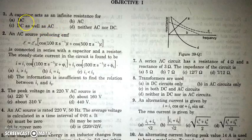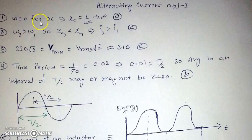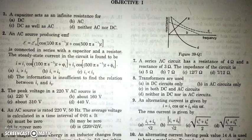A capacitor acts as an infinite resistance for DC, AC, both, or neither of them. DC has zero angular frequency, so omega is zero for DC. And XC is nothing but 1 by omega C. So it should behave as an infinite resistance for DC. It will act like an infinite resistance for DC only.